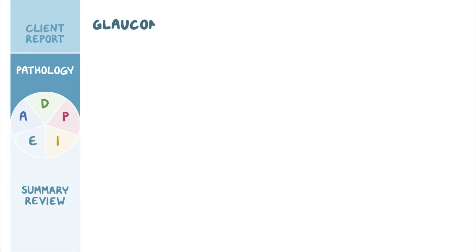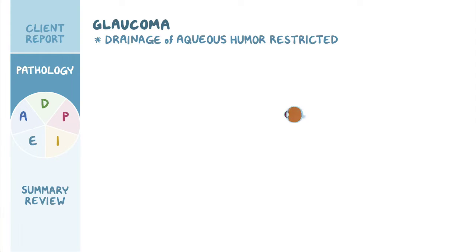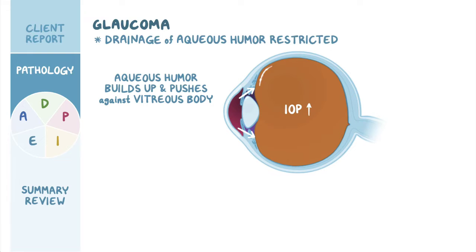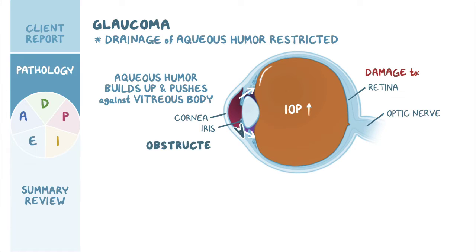In glaucoma, drainage of aqueous humor is restricted. As a result, the aqueous humor builds up and pushes against the vitreous body. This causes intraocular pressure to rise, which eventually leads to damage to the optic nerve and the retina. Depending on whether or not the angle between the iris and the cornea is obstructed, glaucoma can be defined as open or closed angle.